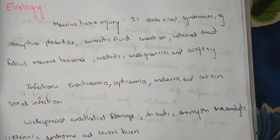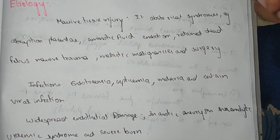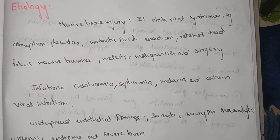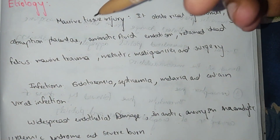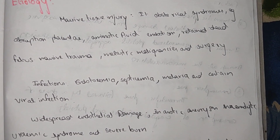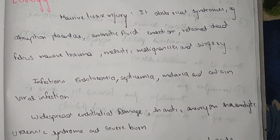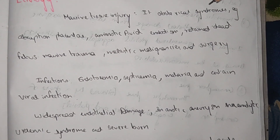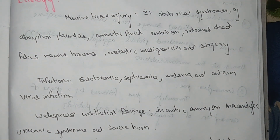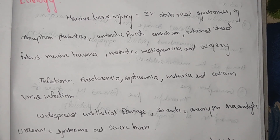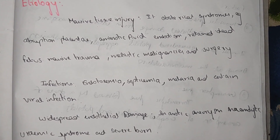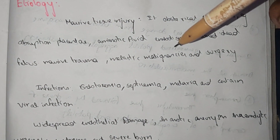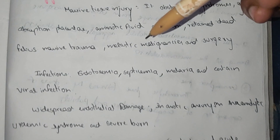The causes of disseminated intravascular coagulation include massive tissue injury. In obstetric syndromes, examples include abruption of placenta, amniotic fluid embolism, and retained dead fetus after massive trauma. These are causes of disseminated intravascular coagulation. Also, metastatic malignancy and surgery are causes.